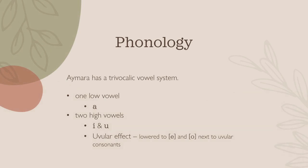Aymara has a trivocalic vowel system, meaning there are three vowels, as mentioned at the start. This consists of one low vowel, A, and two high vowels, I and U. These two high vowels may be lowered by a feature known as the uvular effect. This causes them to lower to E and O respectively when next to uvular consonants.